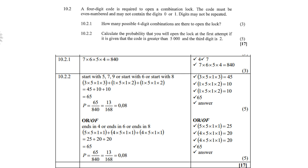10.22: calculate the probability that you will open the lock at the first attempt if the code is greater than 5,000 and the third digit is a 2. So you can start with 5, 7, or 9, or start with 6, or start with 8. It's 3 times 5 times 1 times 3, plus 1 times 5 times 1 times 2, plus 1 times 5 times 1 times 2, giving you 65. Therefore the probability is 65 over 840, which simplifies to approximately 0.08.